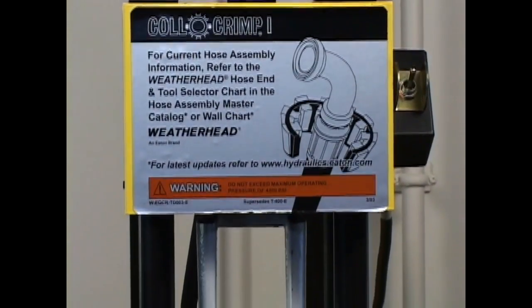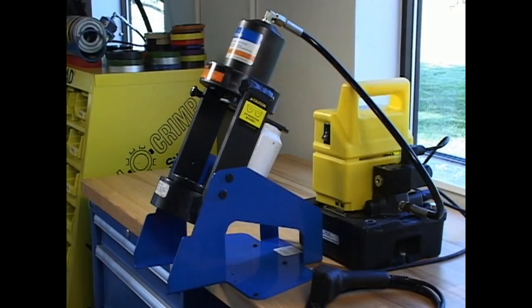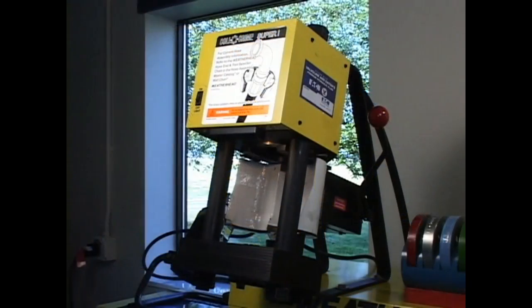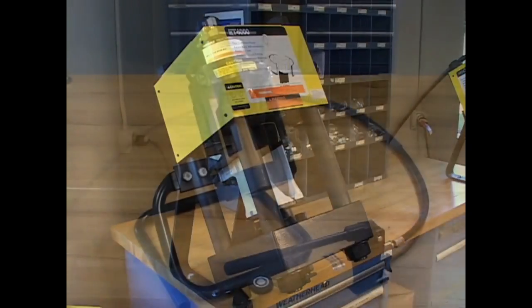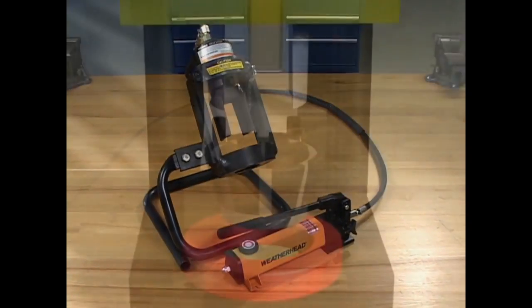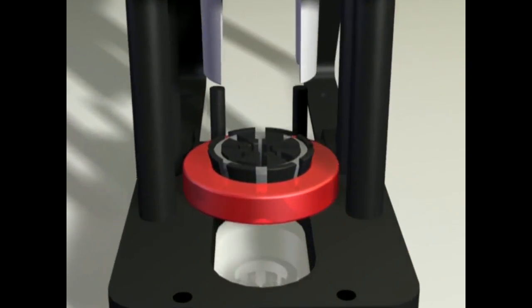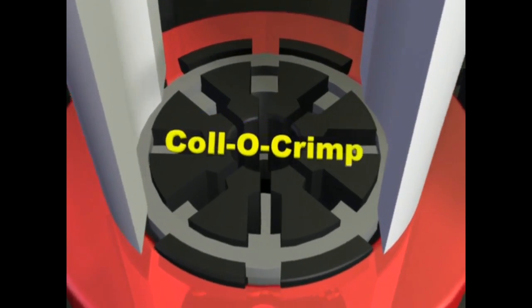There are a number of ColoCrimp models and although there are some minor differences, they are essentially similar in design and operation. There are both stationary models and portable units. Let's begin with an overview of the machines and the components they all have in common.